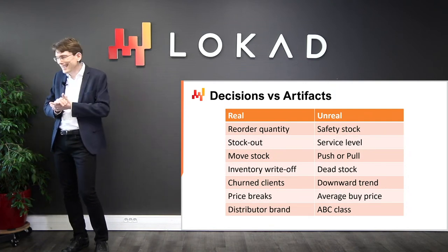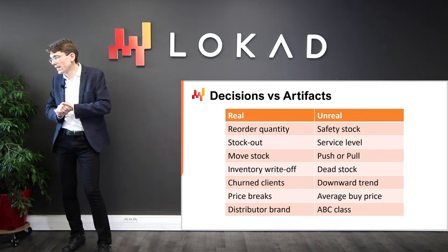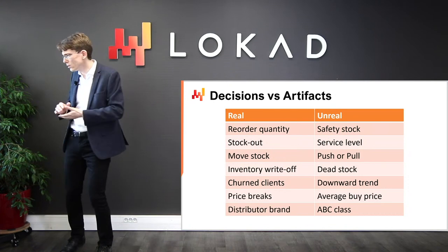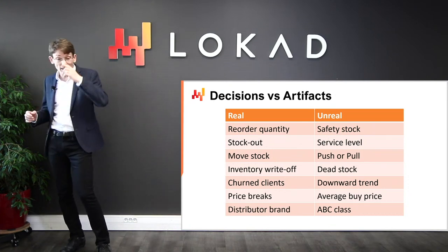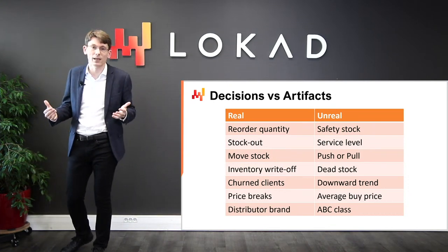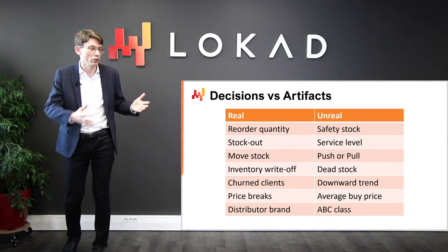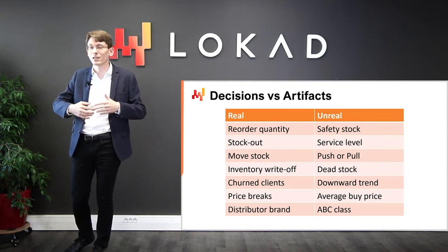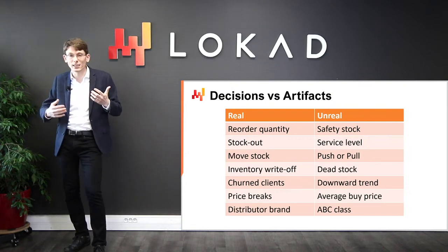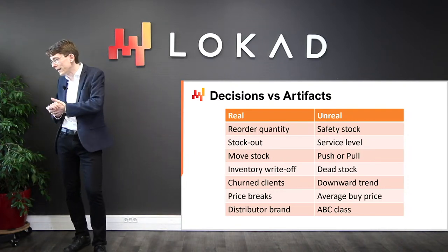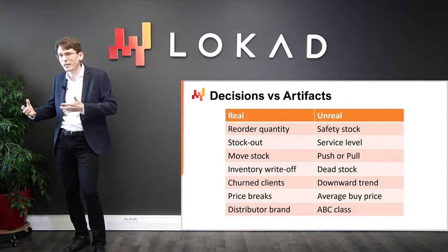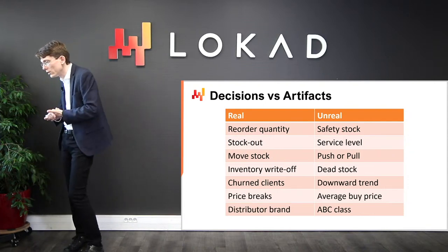On the screen, a list of confusions that I frequently observe in mainstream supply chain circles. Let's start with safety stock. Safety stock is not real. You don't have two stocks — the safety stock and the working stock. There is only one stock and the only decision that can be taken is: do I need more or not? Reordering a quantity is real; the safety stock is not.